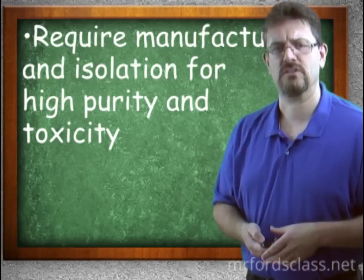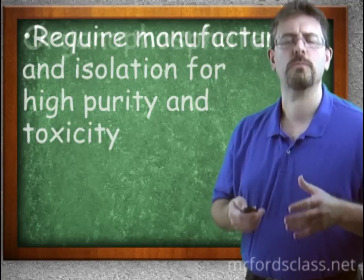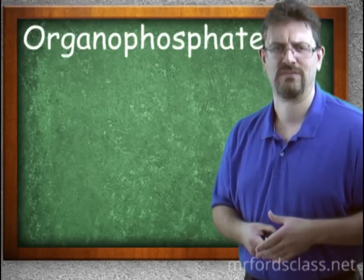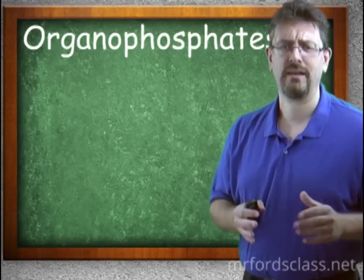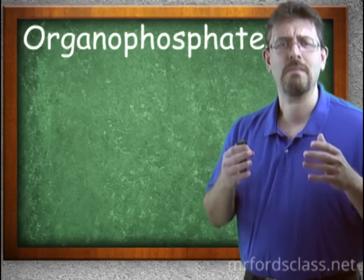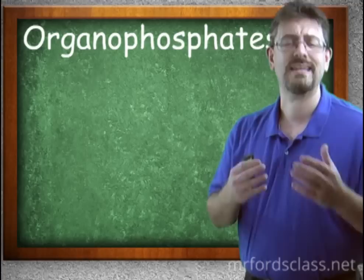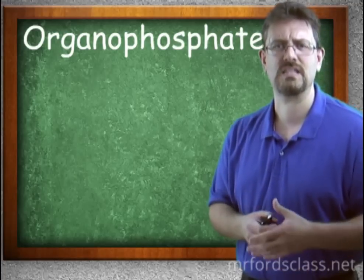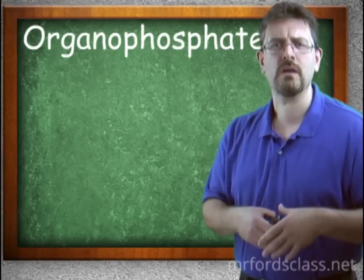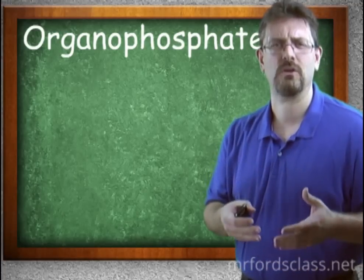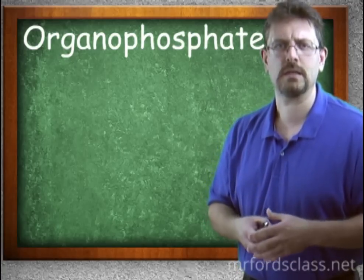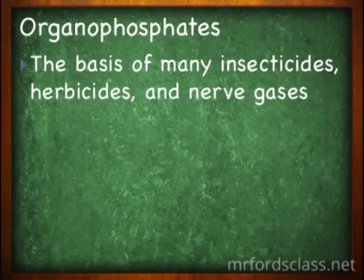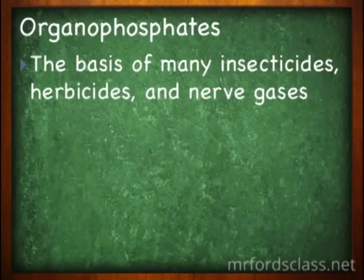Most nerve agents belong to a chemical group called organophosphates. Now, organophosphates are not necessarily a bad thing. In fact, many insecticides — things that kill insects — and herbicides — things that kill unwanted weeds and plants — are based on organophosphates. And unfortunately, so are nerve agents. Organophosphates are at the core of a lot of these nerve agents.